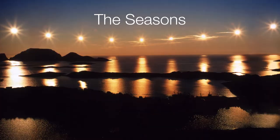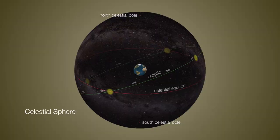So to help us understand the seasons, let's begin with our familiar model of the celestial sphere. We have the celestial equator, we have the sun's path — that is the ecliptic.